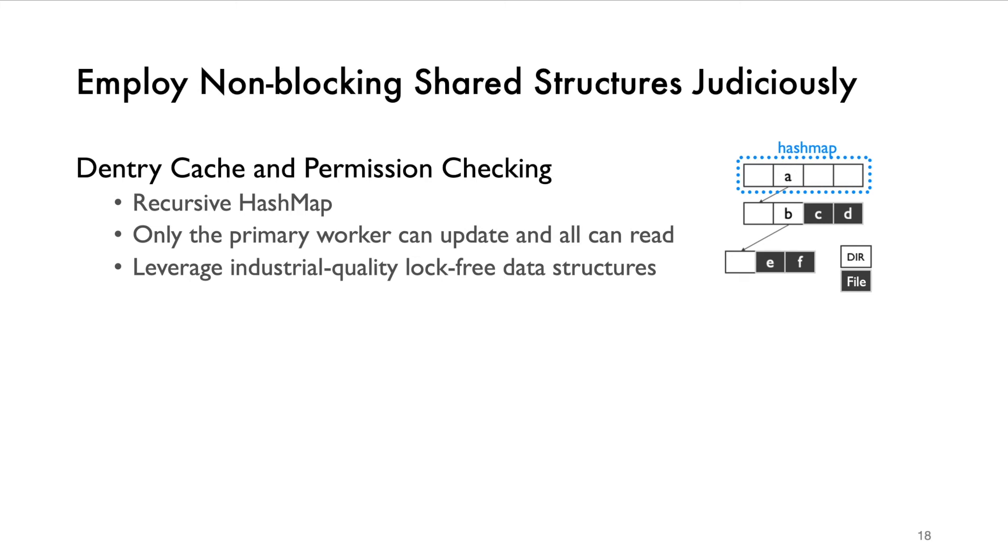UFS carefully designs non-blocking shared data structures for performance. Dentry cache is traditionally a kernel VFS feature and impacts the performance of all path-based operations. UFS exploits industry-quality lock-free data structures to realize the single writer and multi-reader dentry cache, which is also used for permission checking. On any directory modification, the primary as the owner of all directories will remove the item from the dentry cache, such that all the secondaries cannot perform reading of the paths, and then a following retry of the paths towards the primary ensures the correctness.